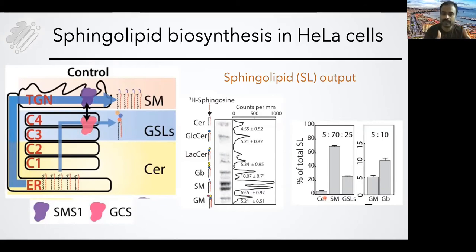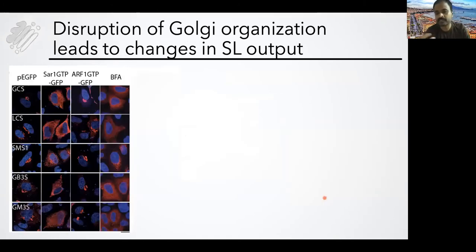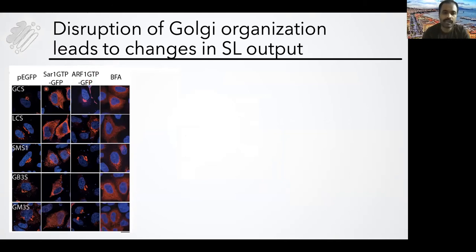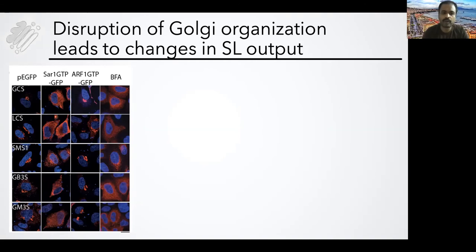We have a way to look at where the enzymes are localized. So we asked the first question: what if we destroy this organization? What if we completely remove the Golgi? We can overexpress certain mutant proteins called SAR1 and R1 GTP — which destroys Golgi organization, bringing all the enzymes back to the ER as a continuous single compartment. Or you can add a drug called brefeldin A, which also brings the Golgi back to the endoplasmic reticulum, making it a single compartment instead of three different compartments. We then studied what happens to glycosphingolipid production under these conditions.